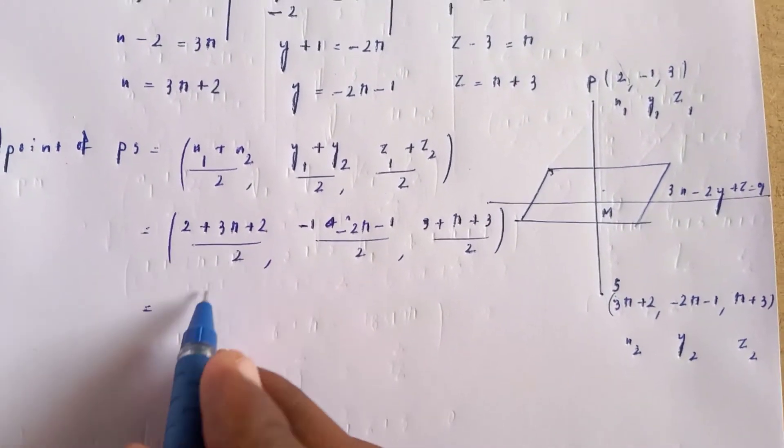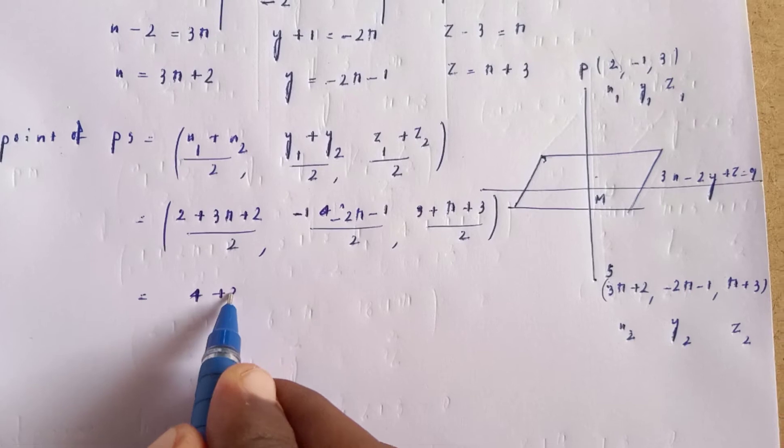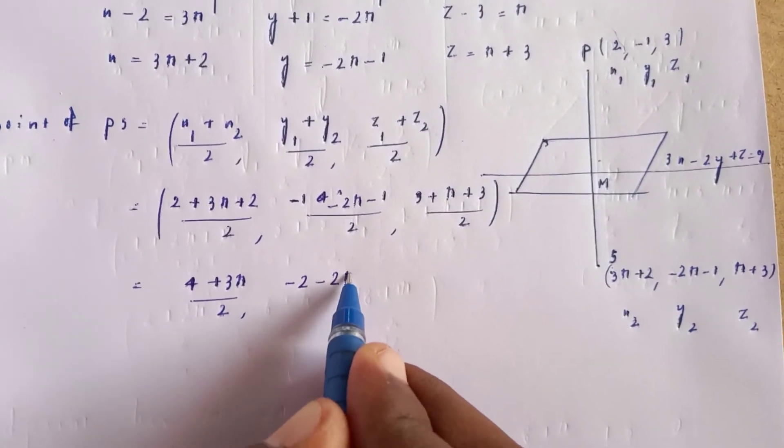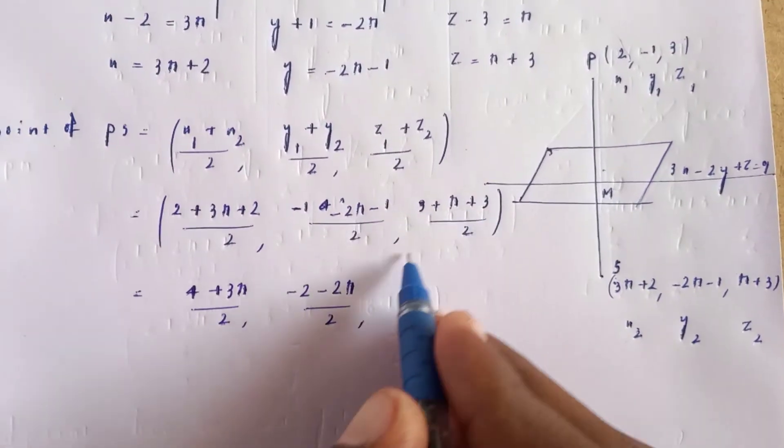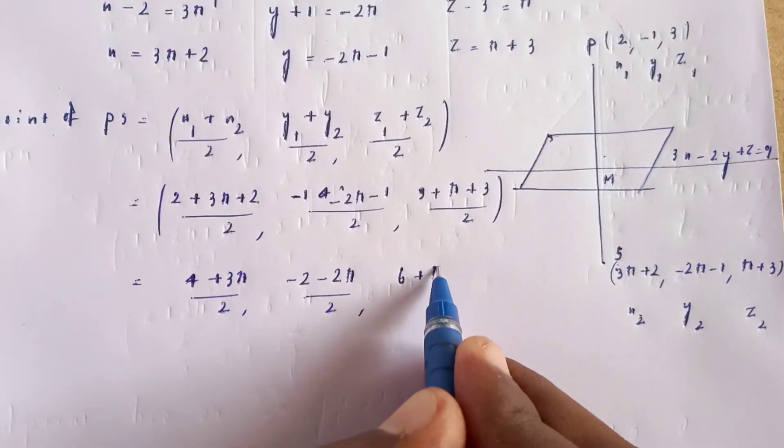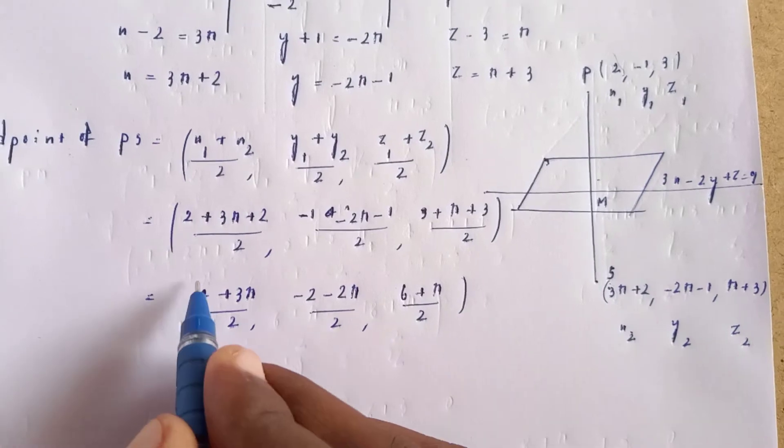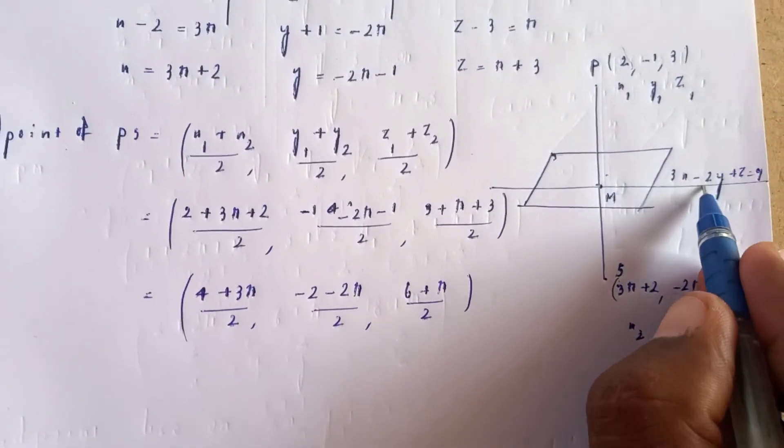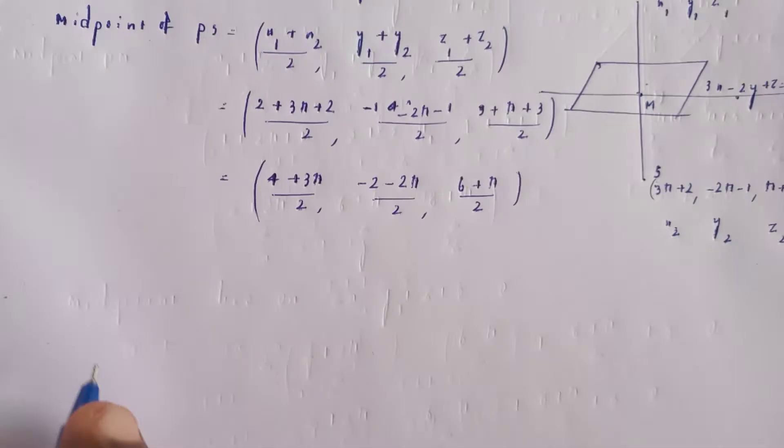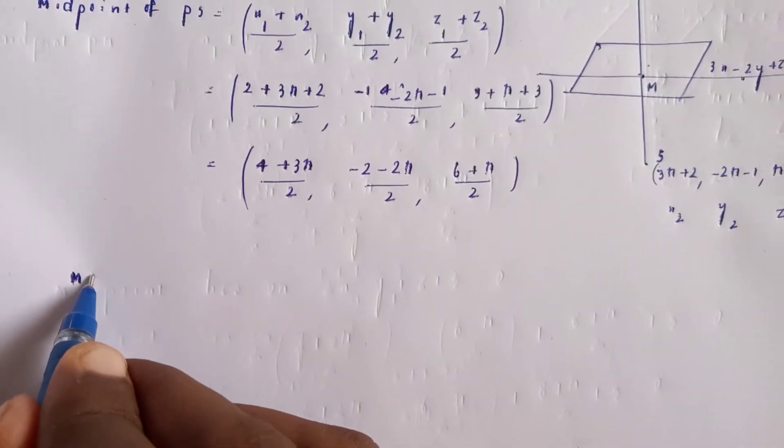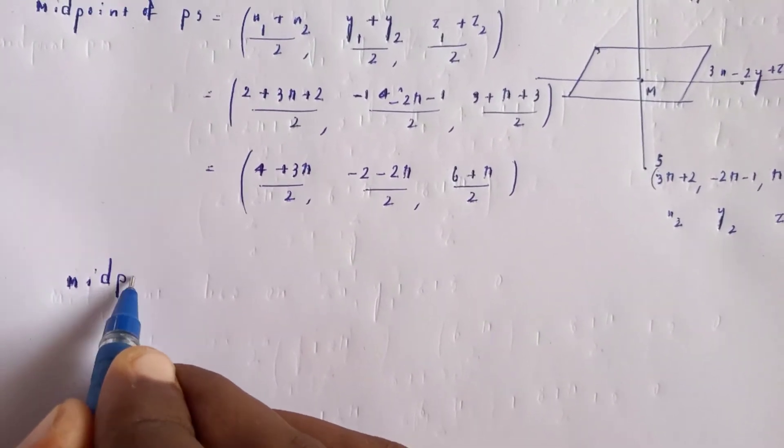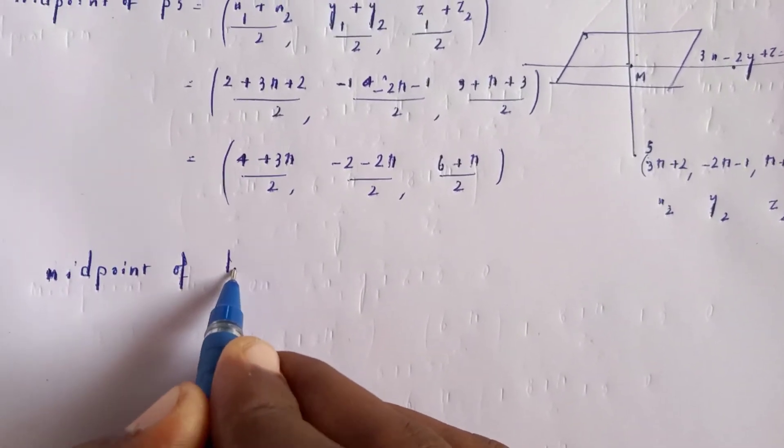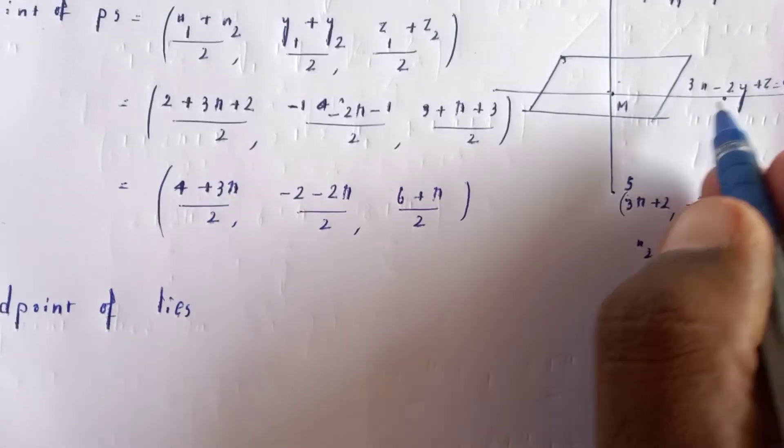Simplifying the midpoint: ((4 + 3r)/2, (-2 - 2r)/2, (6 + r)/2). This midpoint lies on the plane 3x - 2y + z = 9.